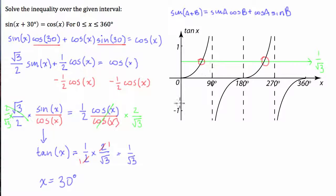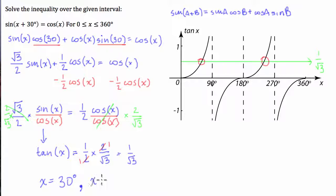Because the tan graph is periodical and repeats itself, if this solution is 30 degrees away from 0, the second solution is going to be 30 degrees away from 180. So the other solution is x equals 180 degrees plus 30 degrees, which equals 210 degrees.